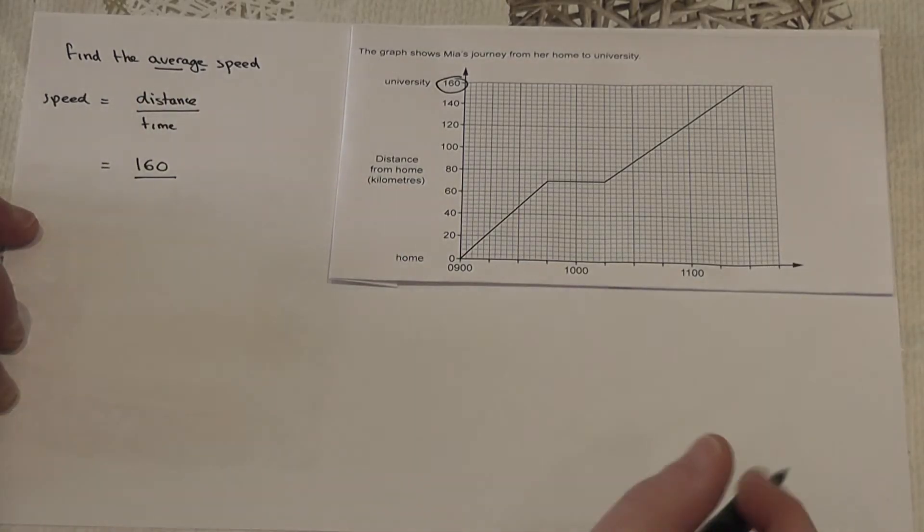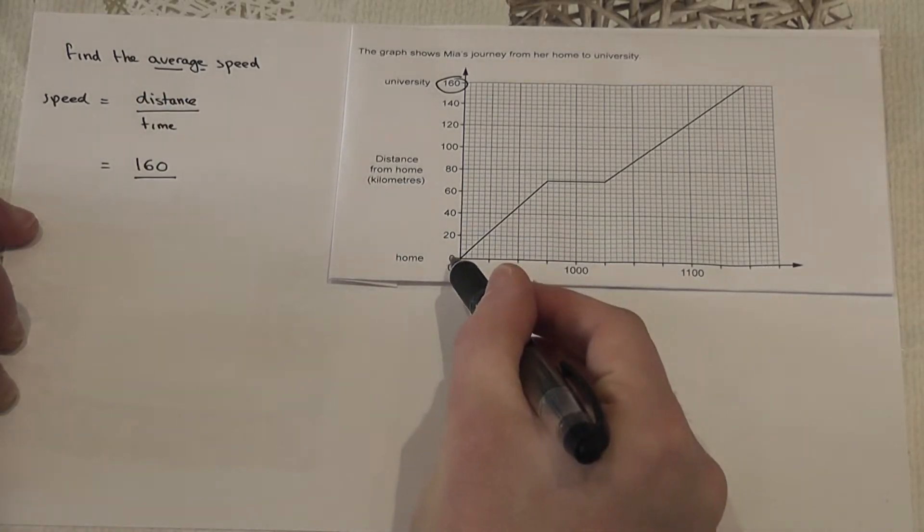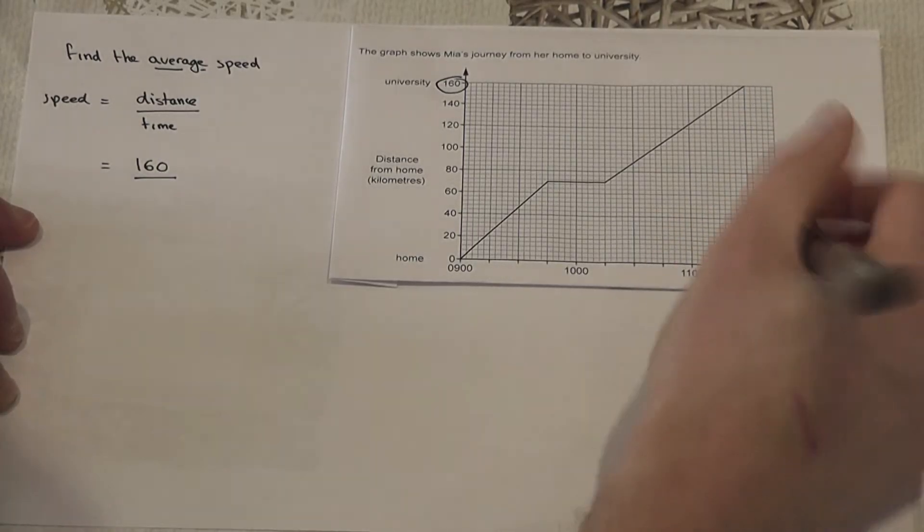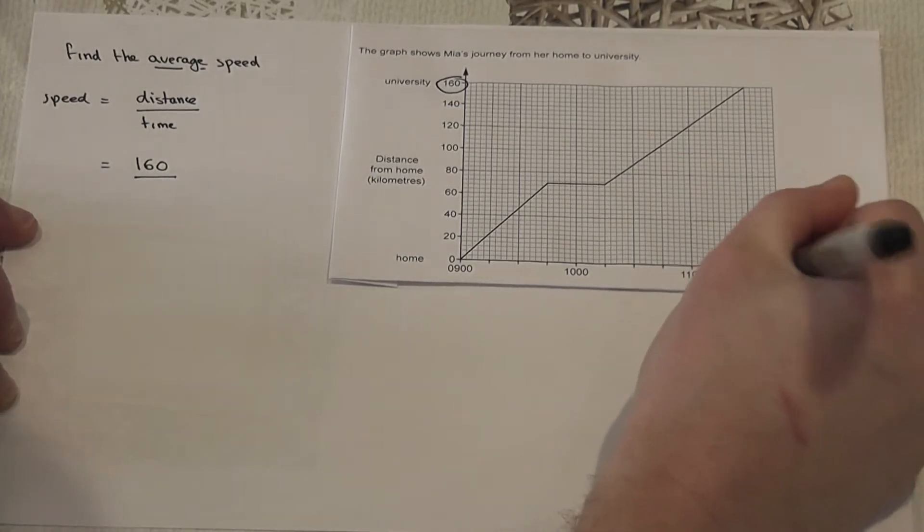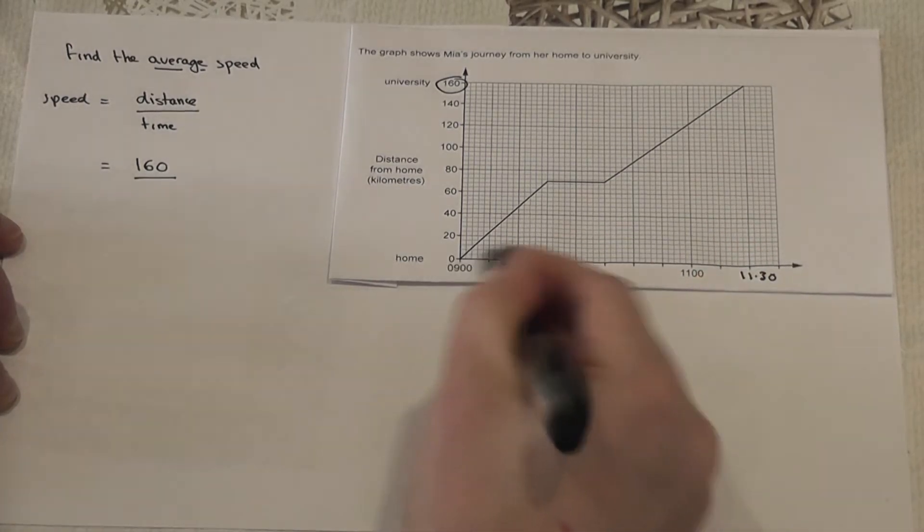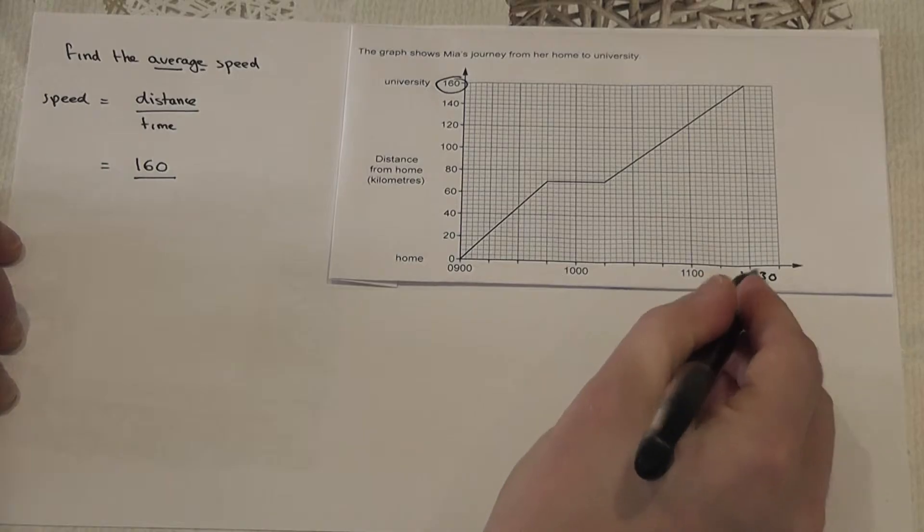Now the total time taken from 9, 10, 11 to the end of the journey must be 11:30, which in hours is two and a half hours.